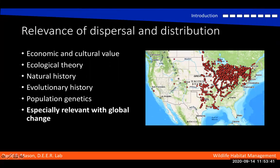This topic is also relevant with global change. Pictured here on the right, we see the distribution of zebra mussels, which are an introduced species associated with people. We alter the environment and we also alter the dispersal abilities of organisms.